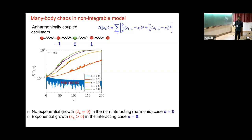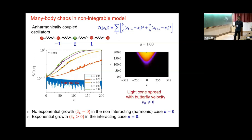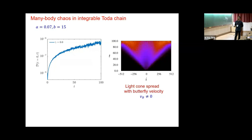First, the non-integrable model with no noise — no measurement. With gamma equal to zero and interaction strength u: if u equals zero, there is no exponential growth; only when u is made finite do we get exponential growth, meaning a positive Lyapunov exponent. The non-interacting model does not have any chaos. You can also see the light cone spread defining the butterfly velocity. For the Toda chain without noise: there is no linear region on the log-normal scale, so the Lyapunov exponent is not positive, probably zero. However, the Toda chain still has a finite butterfly velocity — it has a light cone but no Lyapunov exponent.